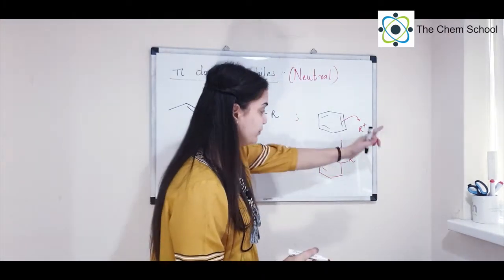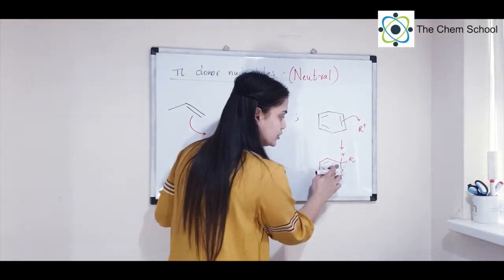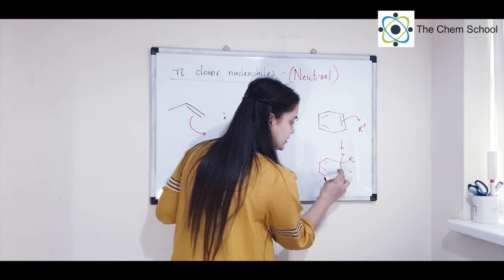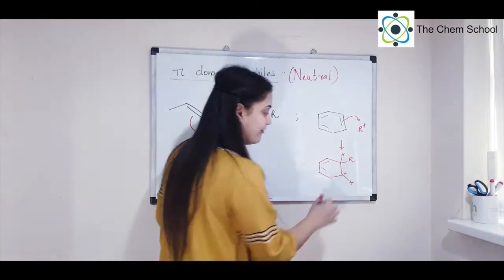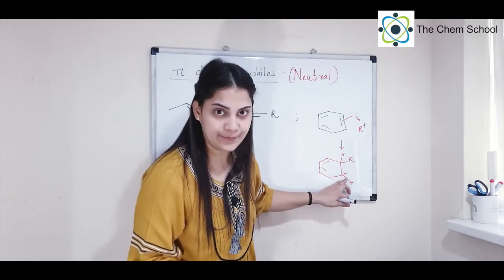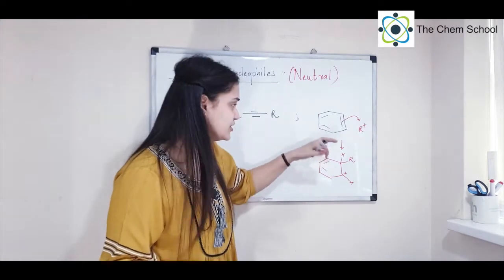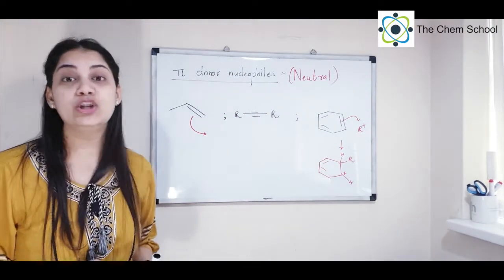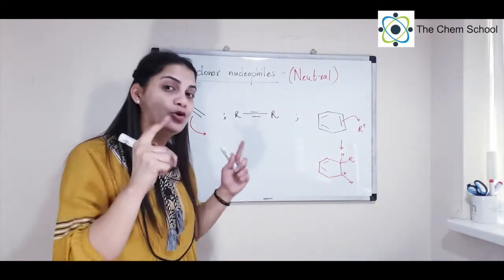When a pi bond is donated — for example in a benzene ring — the carbon that forms the new bond retains four bonds, but the other carbon loses an electron, generating a positive charge at that site. So aromatic rings behave as nucleophiles — remember that aromatic rings are nucleophilic.